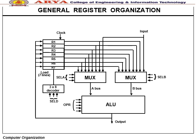General register organization: In this diagram, different registers are connected to multiplexers, which are connected to the ALU. There are three-to-eight decoders connected to the registers, seven buses connected to the registers, and clock input/output selection buses attached.